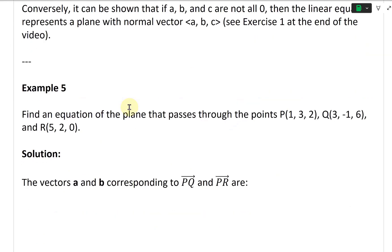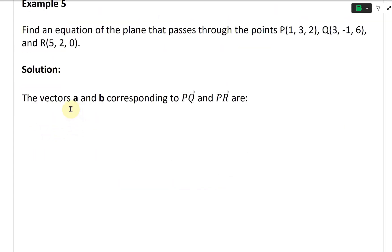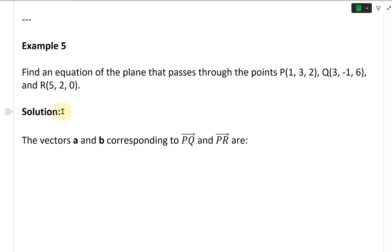Now let's look at Example 5. This states: find an equation of the plane that passes through the points P(1, 3, 2), Q(3, −1, 6), and R(5, 2, 0). So we need the plane equation passing through these three points.